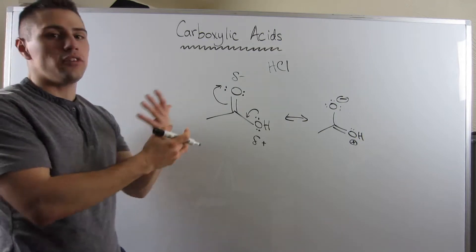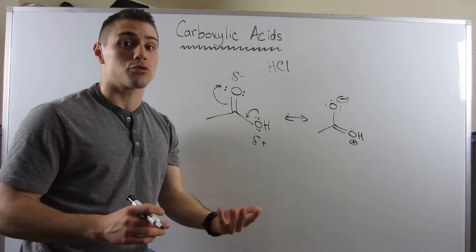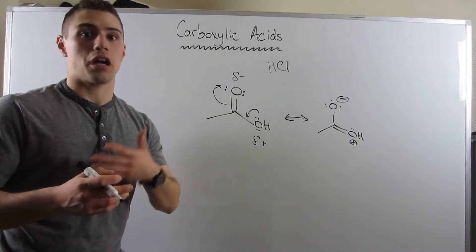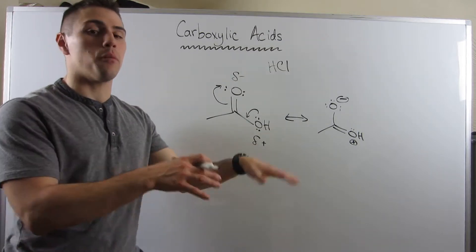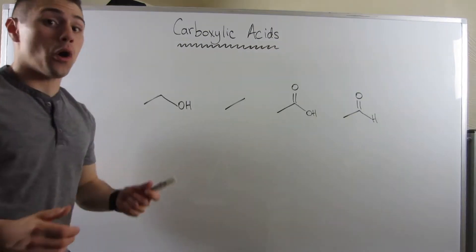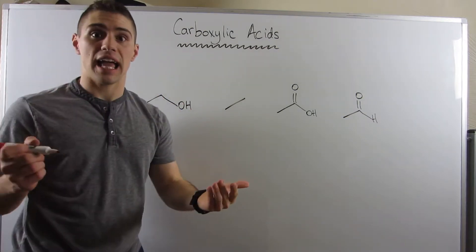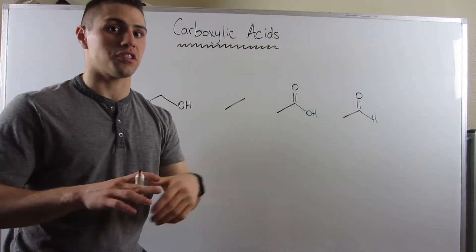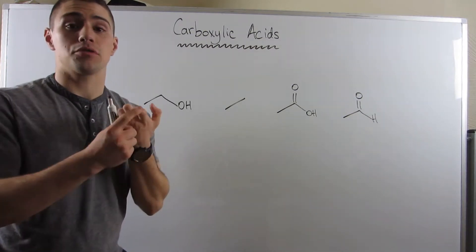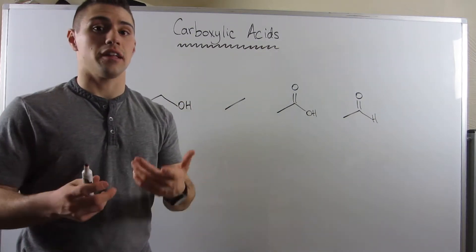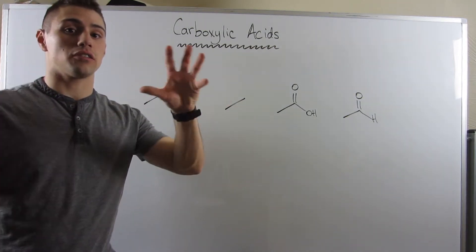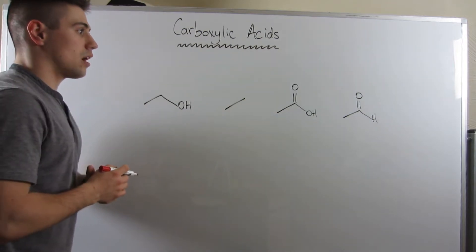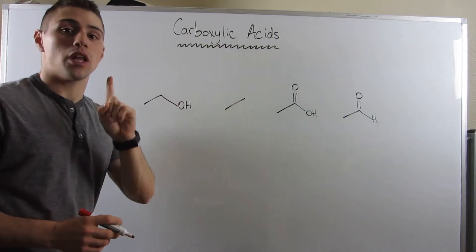This video gives you an intro and refresher on carboxylic acid structure and resonance. Now let's go over boiling points. When ranking boiling points, we look at intermolecular forces from weakest to strongest — things like how many carbons are in the molecule, which relates to London dispersion forces, polarity from electronegative atoms, and hydrogen bonding. We'll rank these four 2-carbon compounds from 1 (lowest boiling point) to 4 (highest).